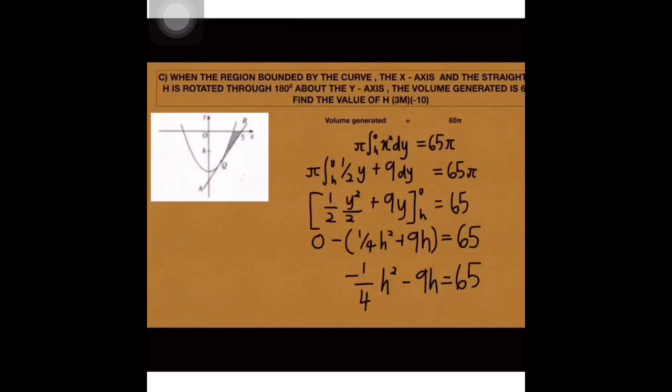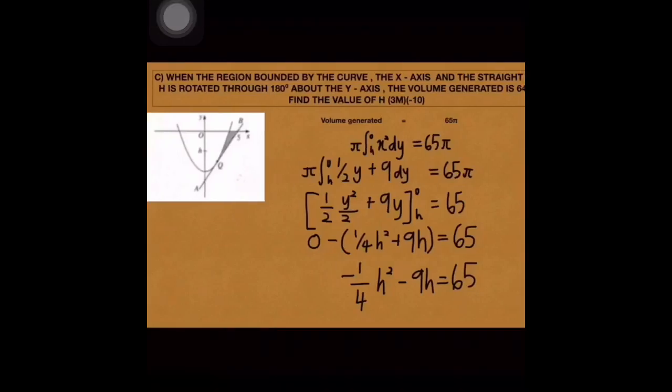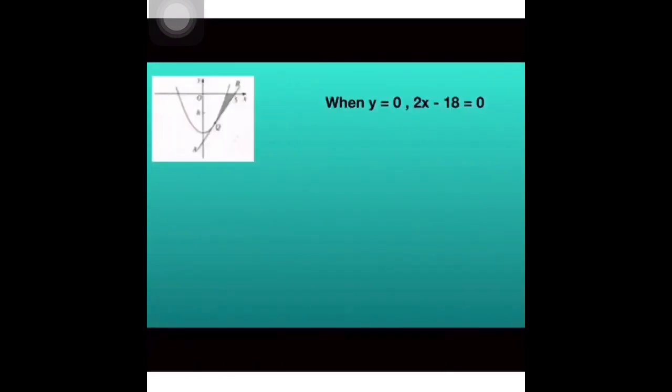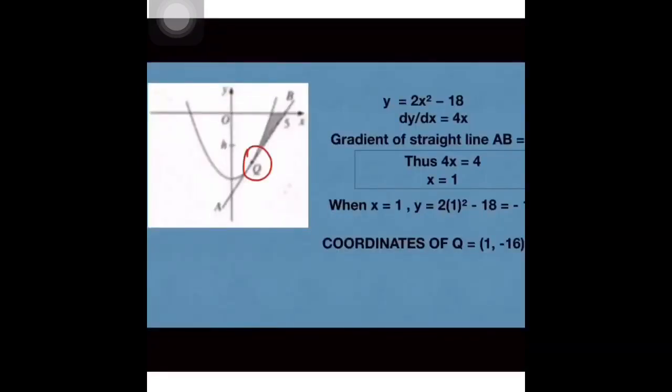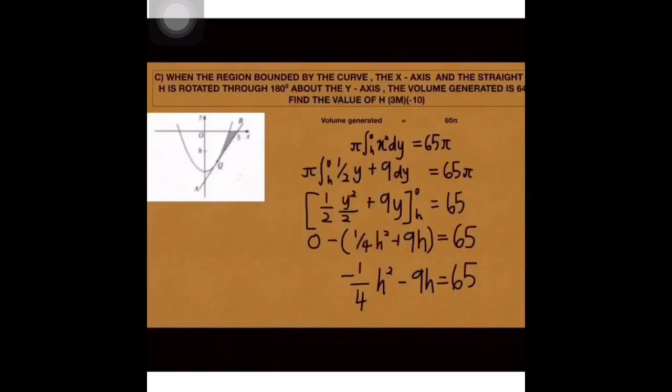Apa formula volume? Kita tahu pi integrated X square dY. Sebab apa dY? dY tu kan dia kata about Y axis, kenalah dY. X square macam mana dapat X square ni? Kita baca balik soalan tadi, equation dia. Equation curve Y = 2X square tolak 18. Kita pindah Y tambah 18 bahagi 2, dapat X square. X square tu kena pindah ke tak? Tak payah sebab memang nak masukkan X square pun. Dapat 1 per 2 Y tambah 9.